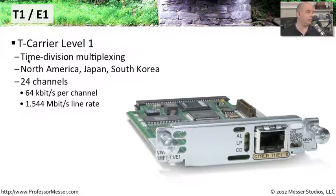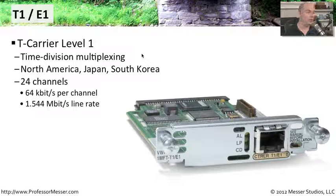T1 uses something called time division multiplexing. It has digital signals coming through, and it decides what channel is going to be used based on time, moving between all of those channels using that same time division method.